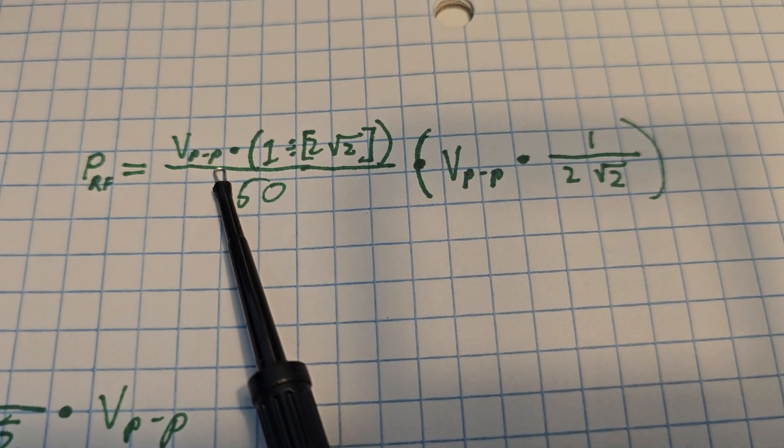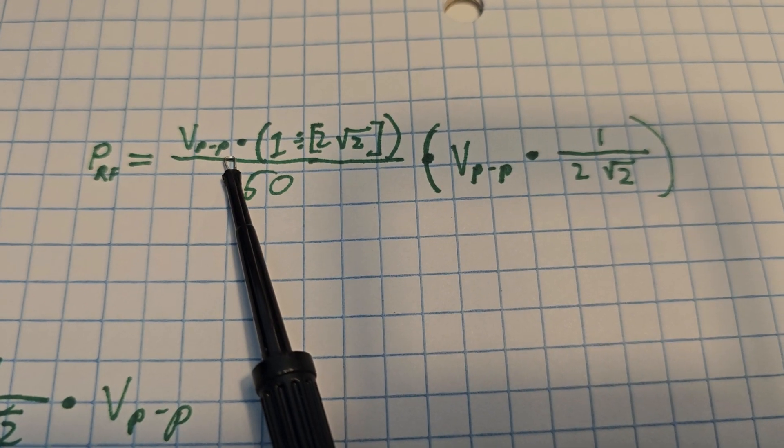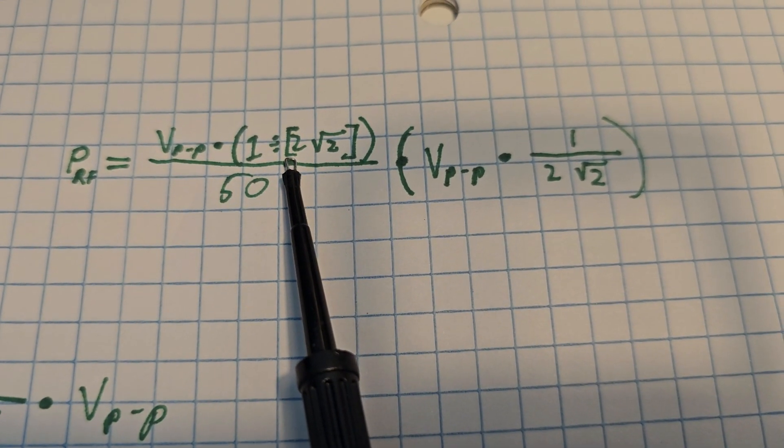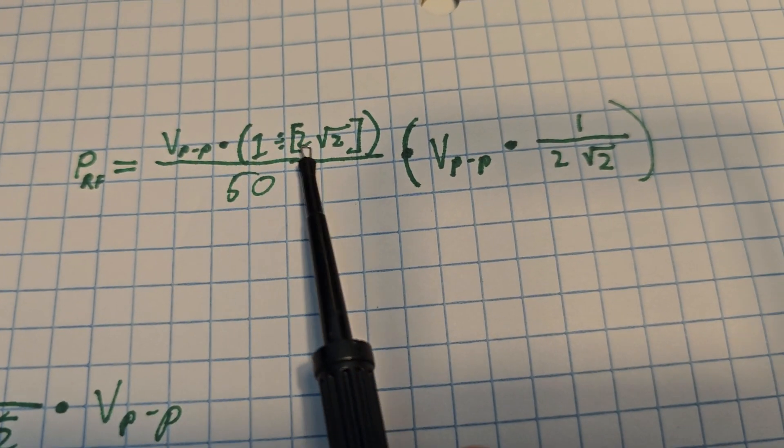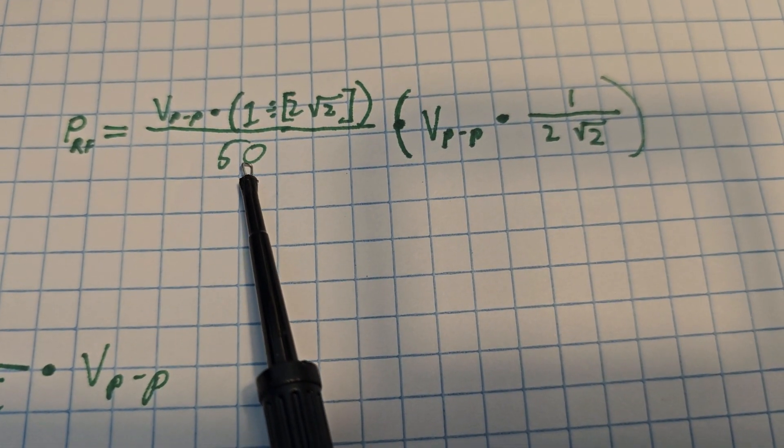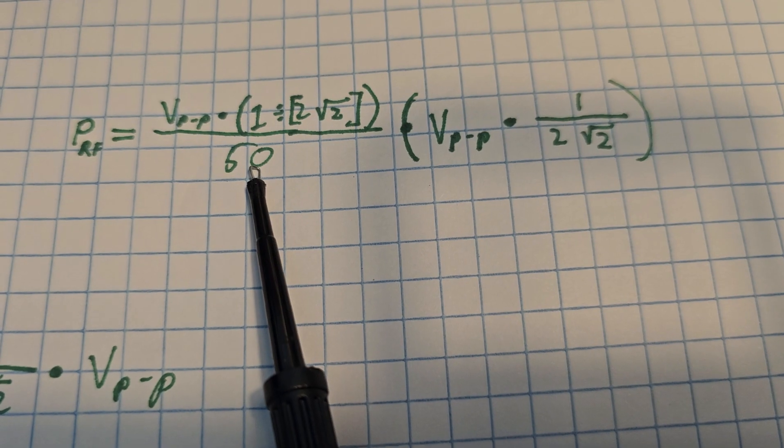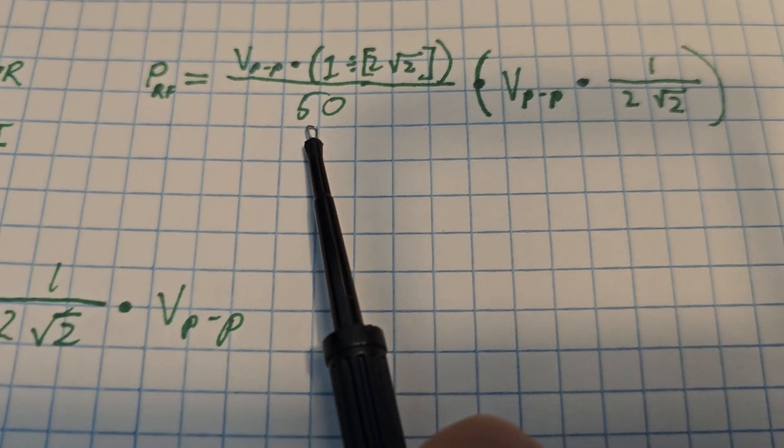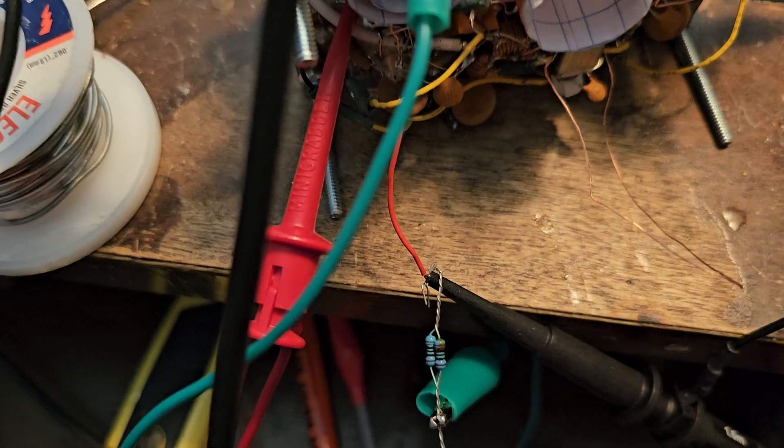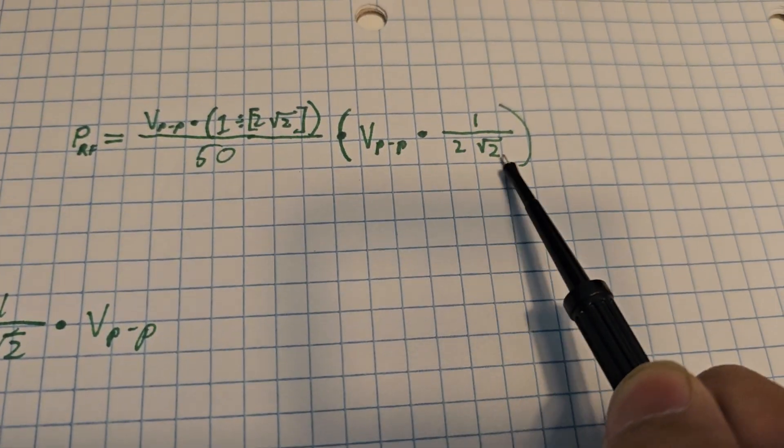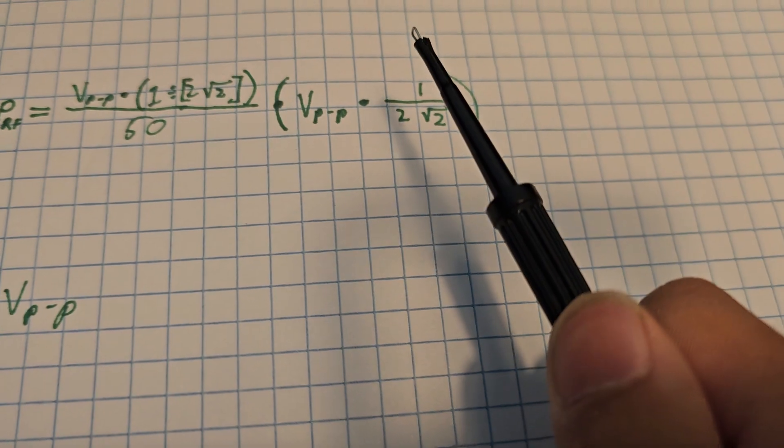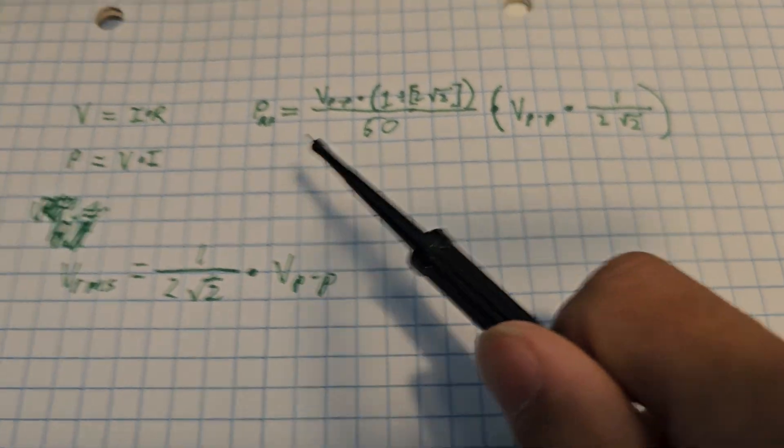What you see here is we use the peak-to-peak voltage to find the RMS voltage, and that up there is the RMS voltage, and that's divided by 50 to find the current flowing through the resistor. I'm using 50 here because I'm using a 50 ohm load. And here is just to find the voltage again to multiply to find the power.